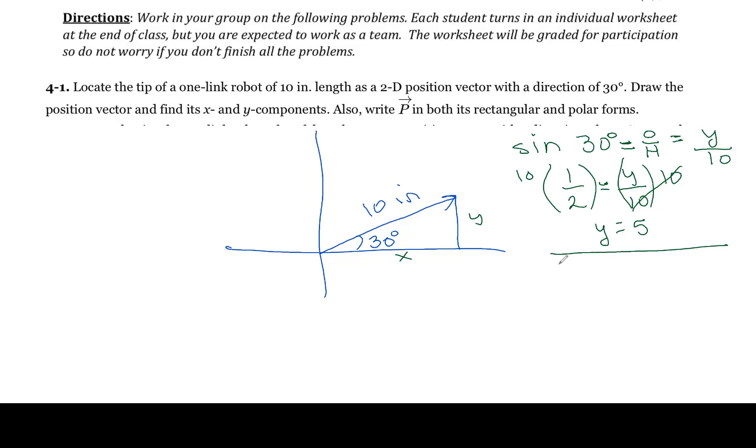And then I can say, well, the cosine of 30 degrees is equal to the adjacent over the hypotenuse, which is equal to x over 10. And we know that cosine of 30 degrees is the square root of 3 over 2 equals x over 10.